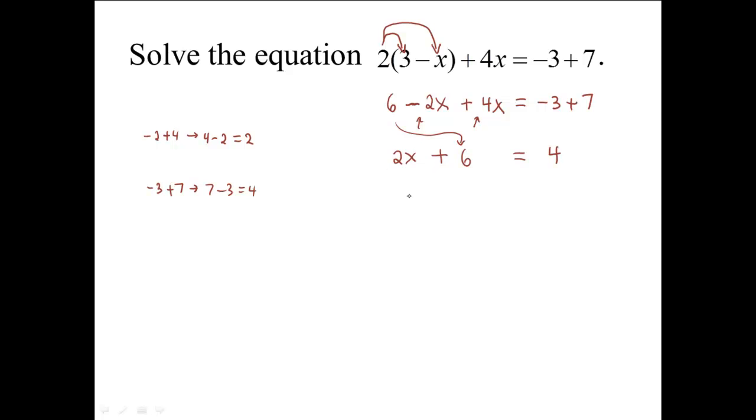So we have 2x plus 6 equals 4. To isolate this x term, we will subtract 6 from both sides of this equation. 6 minus 6 is 0. 2x plus 0 is simply 2x.